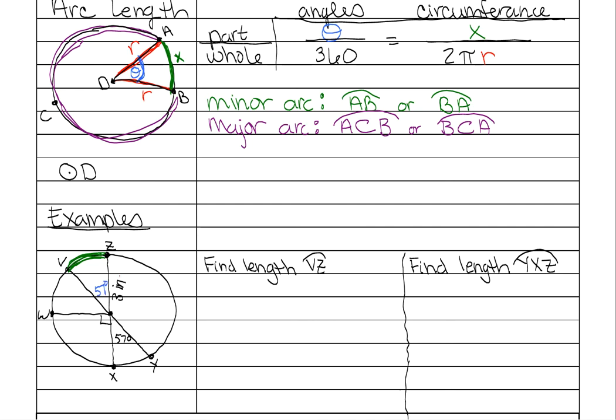And remember since this is 57 so is this one. Then of course our radius is the other piece of information that we need, which is right here.